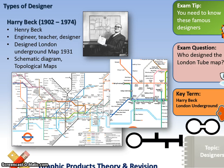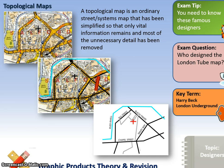The four designers you need to know: Harry Beck was an engineer and teacher who designed the London Underground schematic map. He is known as a schematic or topological map maker — maps that take something detailed and break it down into a simplified schematic look.